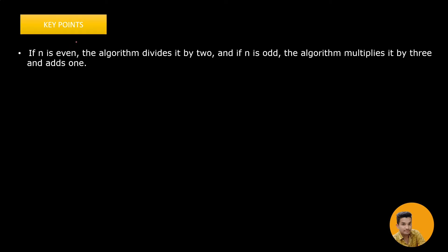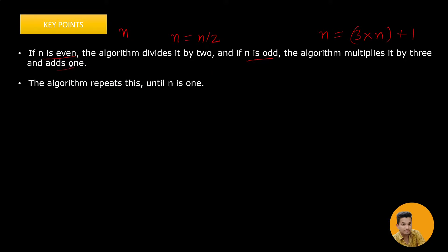The key points in the problem are: we will be given a number n and we need to perform two operations. First, if n is even, the algorithm divides the number by 2. If it is odd, the algorithm multiplies it by 3 and adds 1. We need to keep doing this until the number becomes 1.